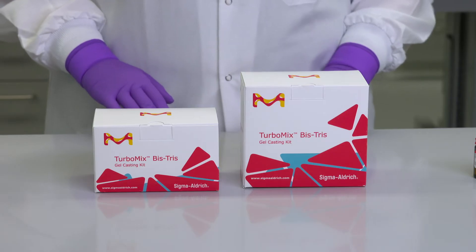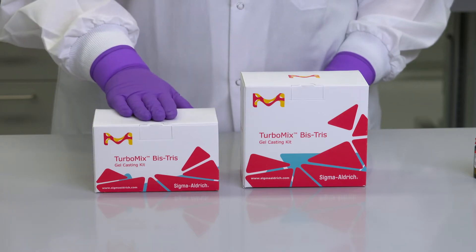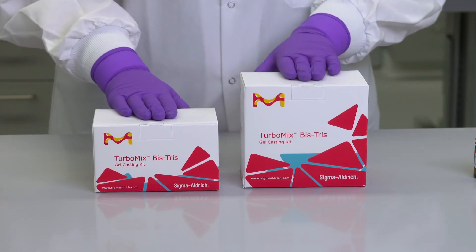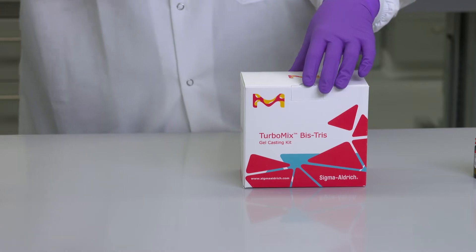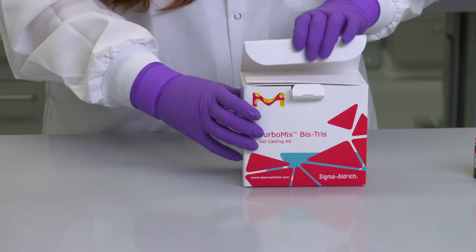The TurboMix BisTris Gel Casting Kit comes in two different sizes, enough to make 10 gels or 60 gels. This kit has been optimized to simplify gel preparation steps and minimize reagent waste.